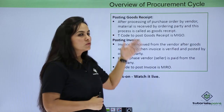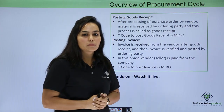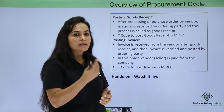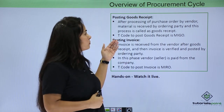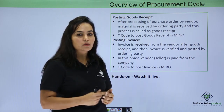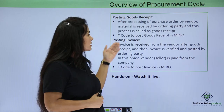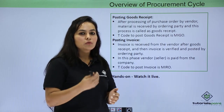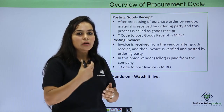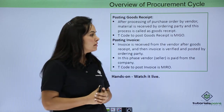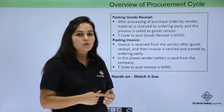The next step is posting goods receipt. Once the order for your computer has been placed with the vendor, you will be receiving that computer and you will post the goods receipt in transaction code MIGO. The next step is posting the invoice. Once the computer has been received, you will receive an invoice from the vendor.